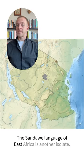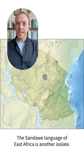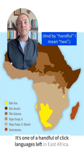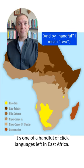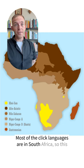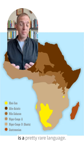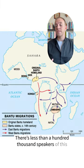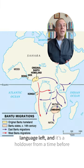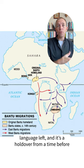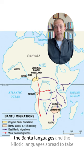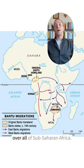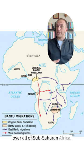The Sandawe language of East Africa is another isolate. It's one of a handful of click languages left in East Africa — most click languages are in South Africa, so this is a pretty rare language. There are less than 100,000 speakers left, and it's a holdover from a time before the Bantu and Nilotic languages spread to take over all of sub-Saharan Africa.